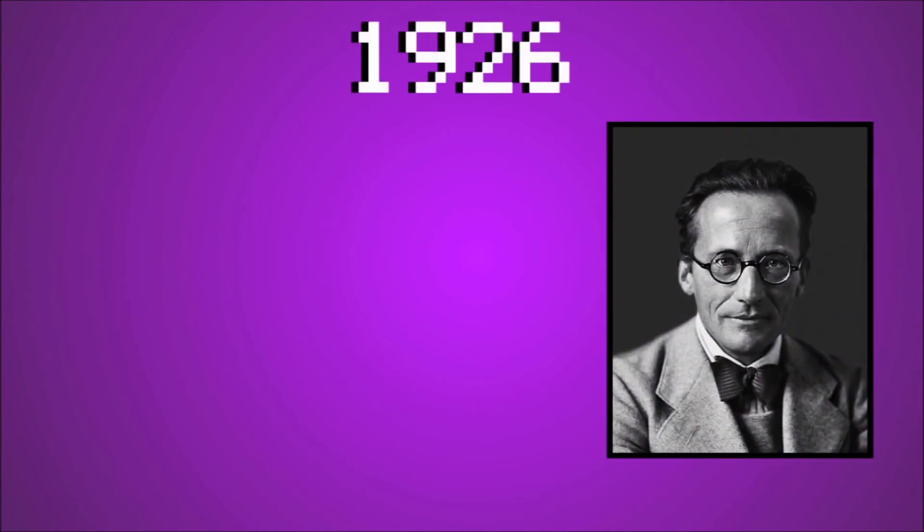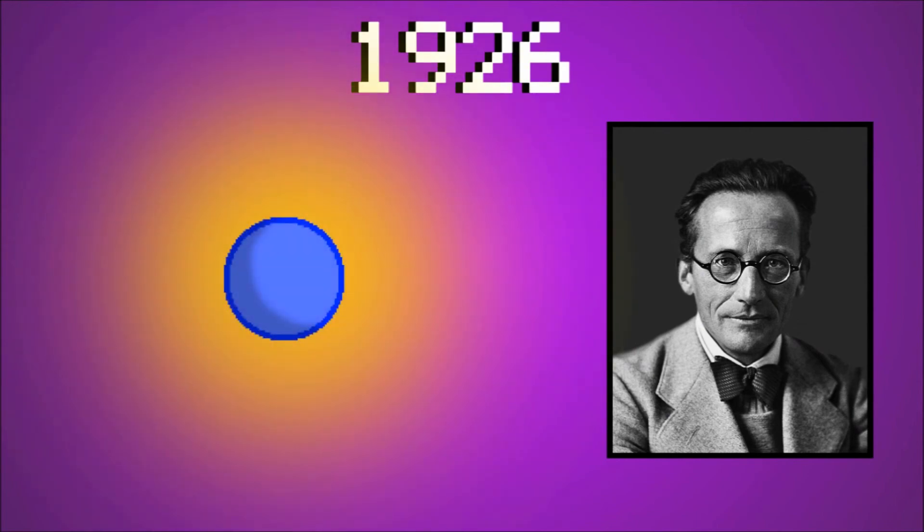Though close to the modern atomic model, there was still one major modification to the Bohr model to reach where we are today. This modification was made by Erwin Schrödinger in 1926 when he proposed the electron cloud model. This model claimed that we could never know exactly where an electron is at any given moment, but that their location is governed by probability.